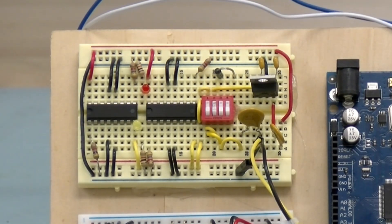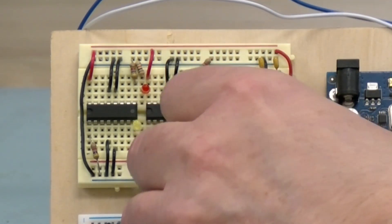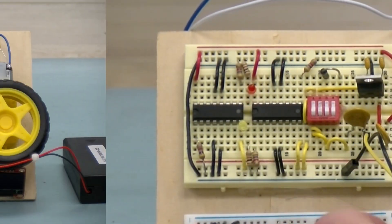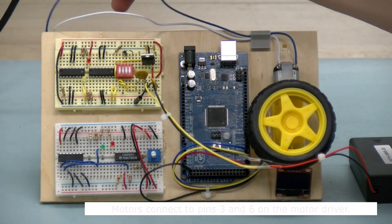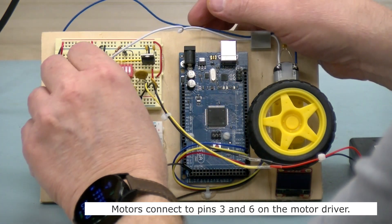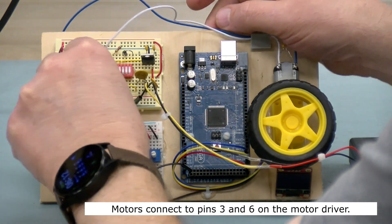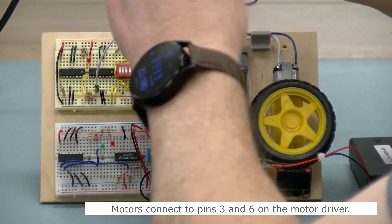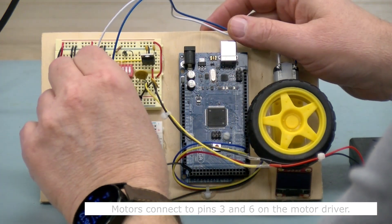Now I'm going to attach the two motor wires and these go to pin number three and pin number six on the motor driver. It's really just to the left and to the right of the ground pins.